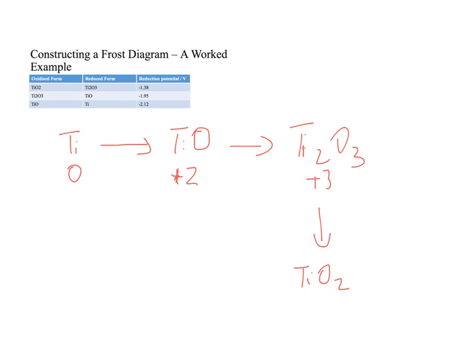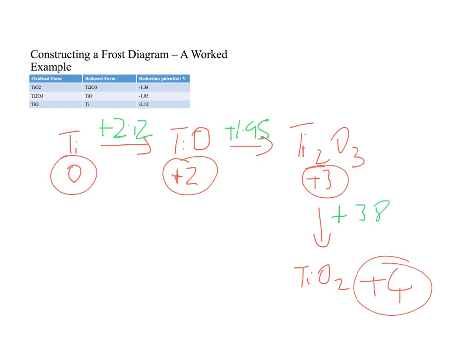This directionality, going from titanium zero to titanium plus four, is the opposite way to the way the data is presented in the table. That means it will have the opposite sign. So this first step is not going down in volts by 2.12, it's now going up in volts, plus 2.12. The second step, the same thing is true. We're going the other direction, so we flip the sign of the number. So we're going plus 1.95. And that third step, plus 1.38.